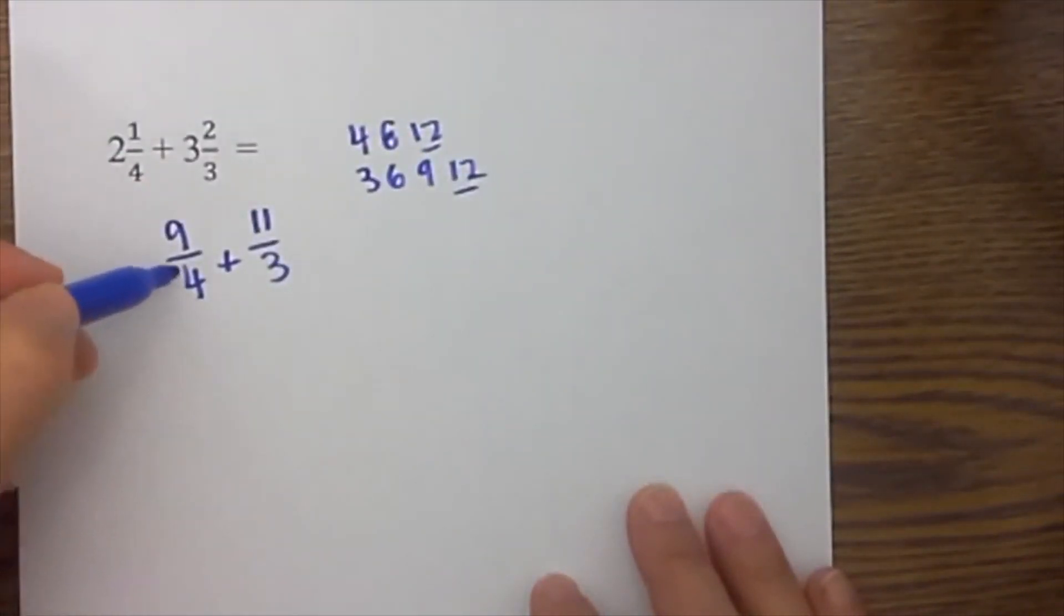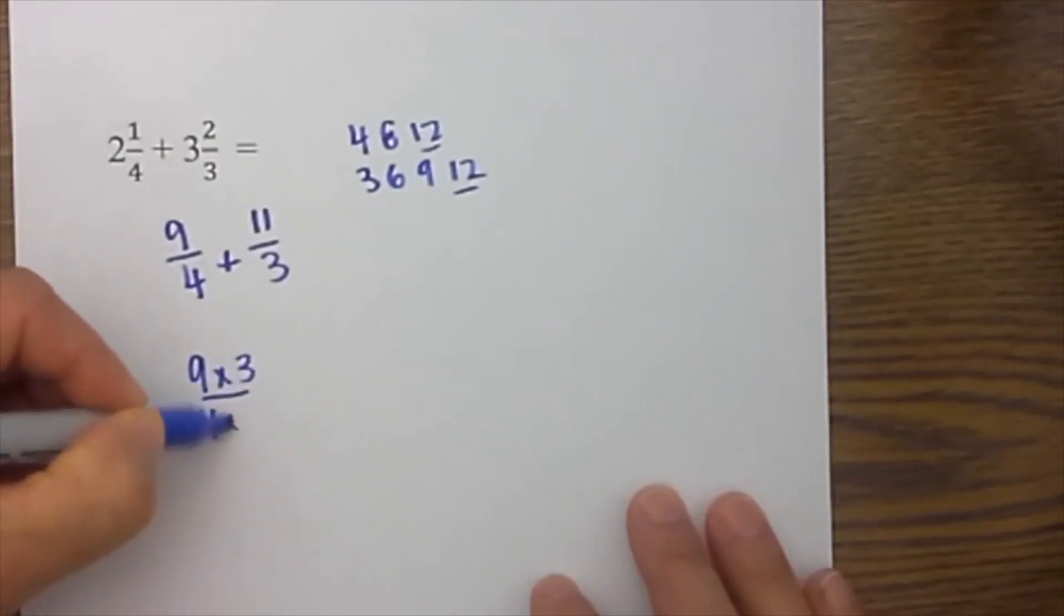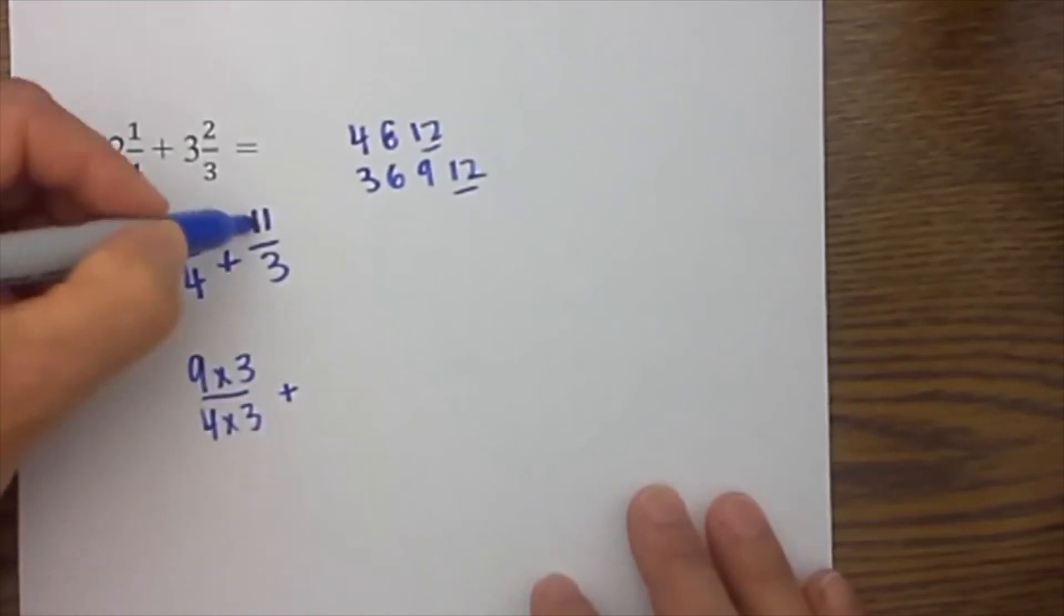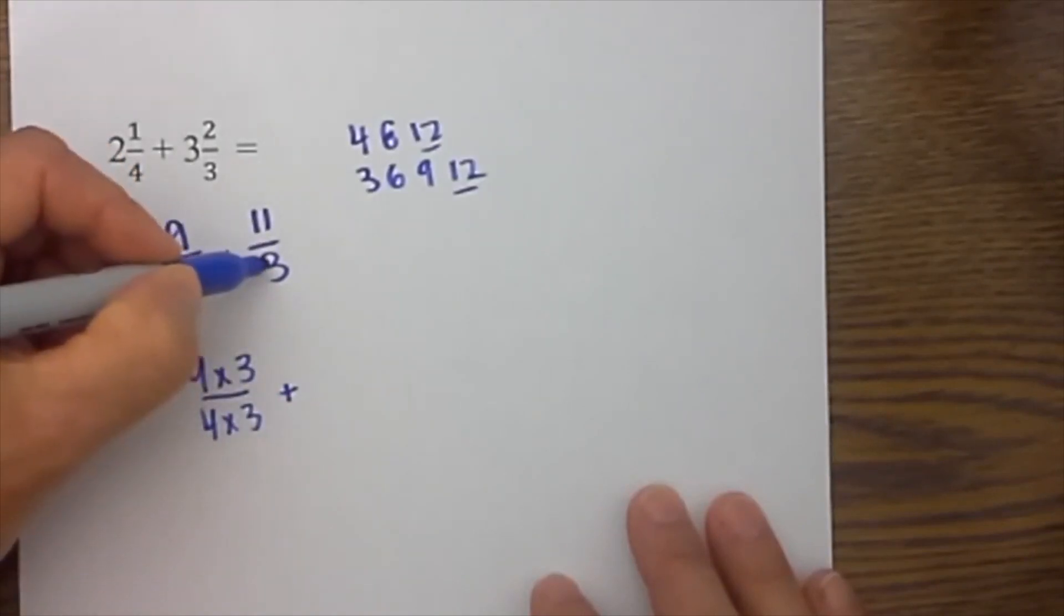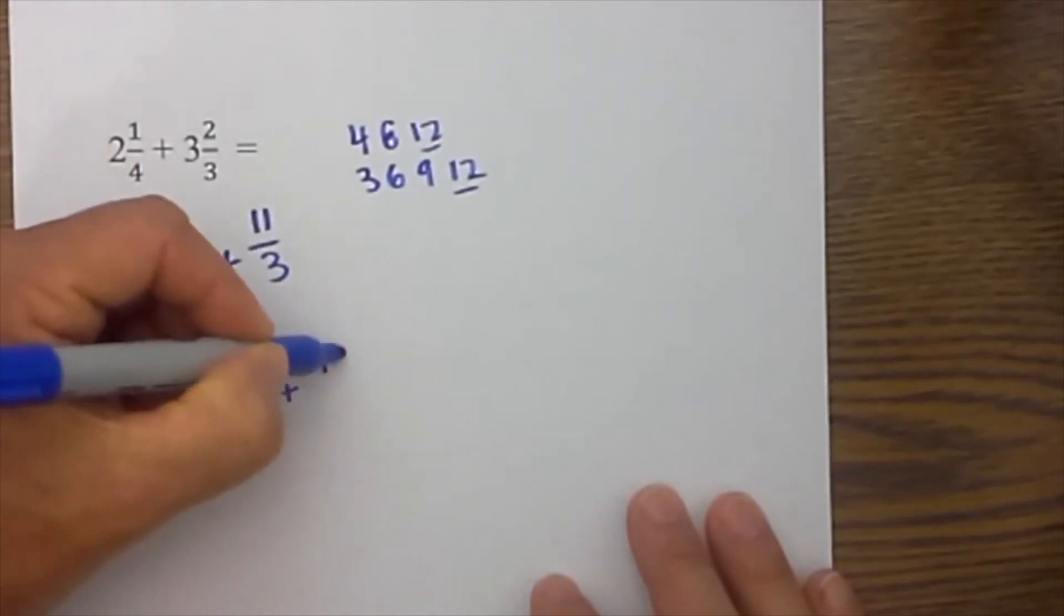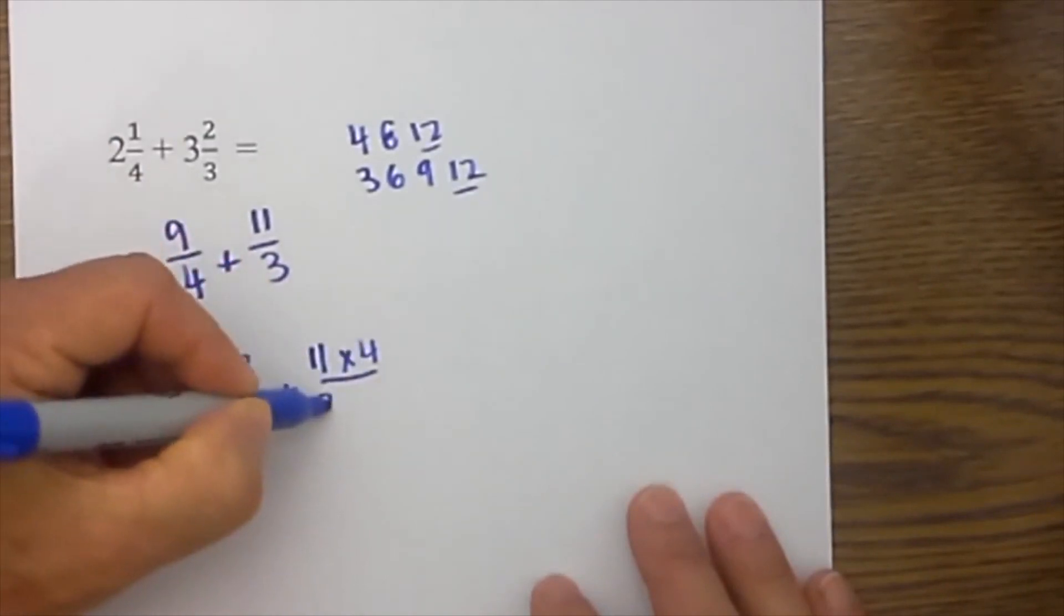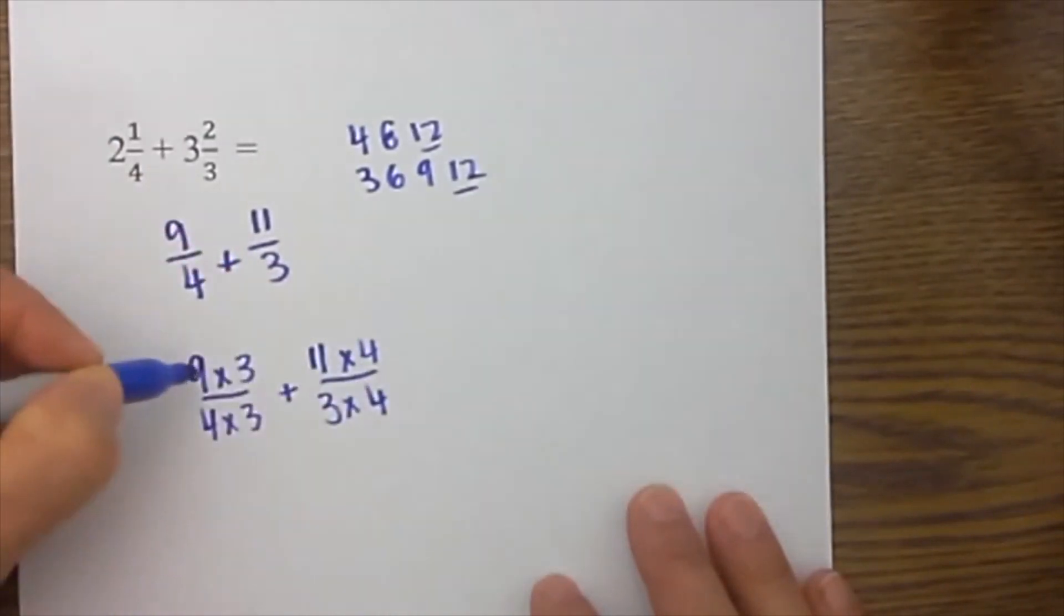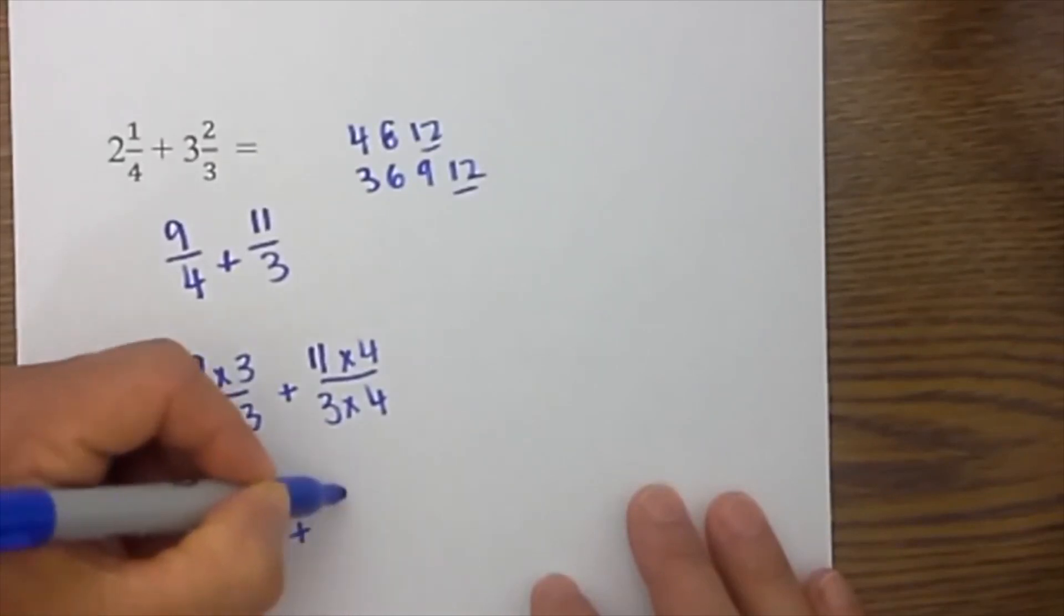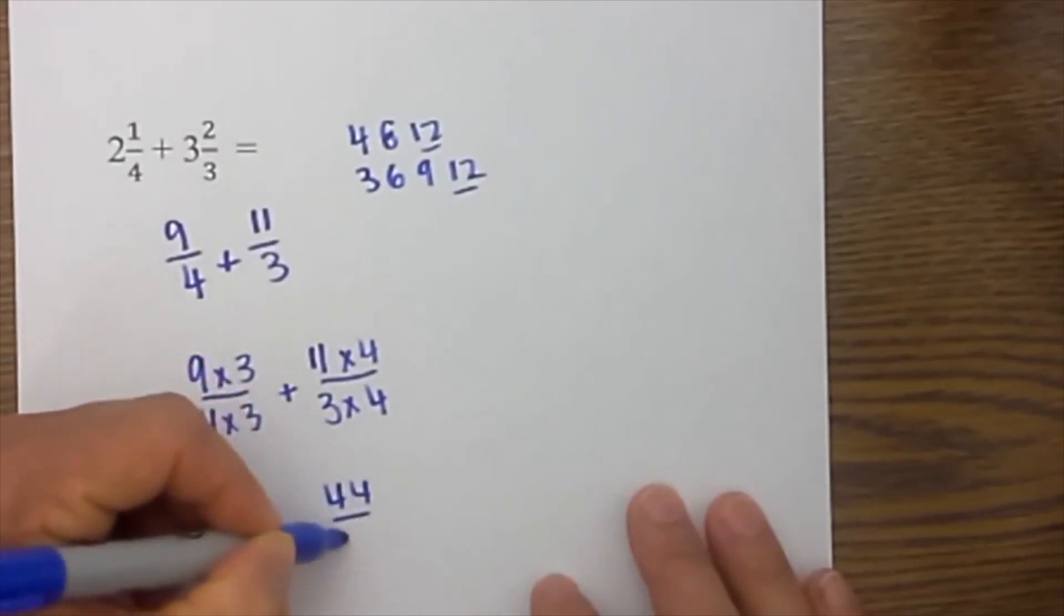4 goes into 12 three times, so it will be 9 times 3 over 4 times 3, plus 11. 3 goes into 12 four times, so it will be 11 times 4 over 3 times 4. Then I multiply: 9 times 3 is 27 over 12, plus 44 over 12.